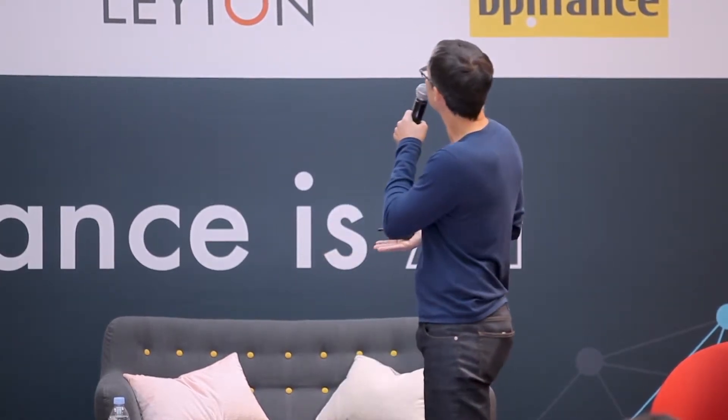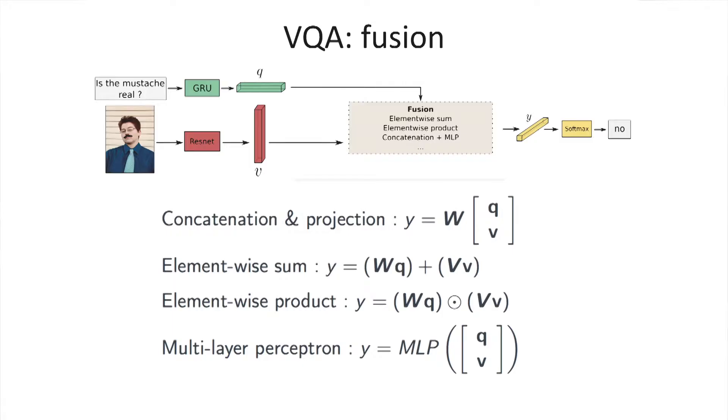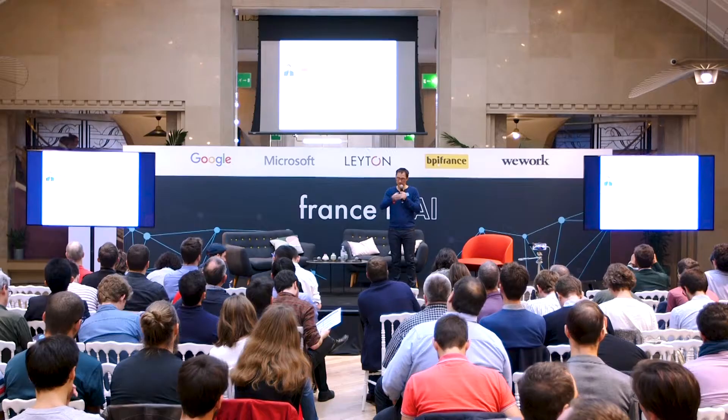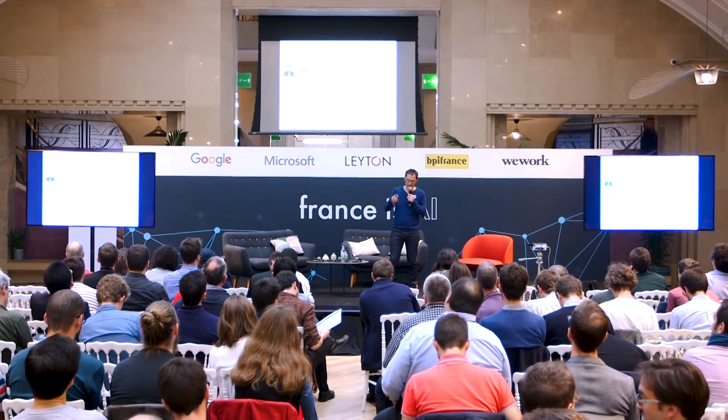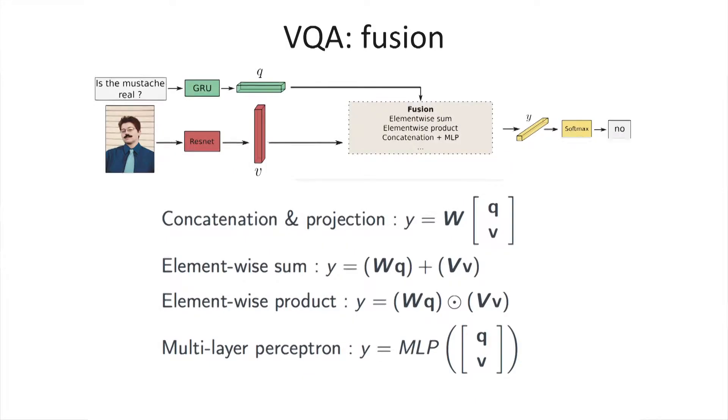As a concrete example: given one image and the question 'Is the mustache real?' — the answer is no, because it has been drawn on the picture. On the image side, a classical deep ResNet produces one vectorial representation. For the question, an RNN such as GRU produces one vector Q. The fusion question is then how to combine these two vectors to produce a scoring vector for all possible answers.